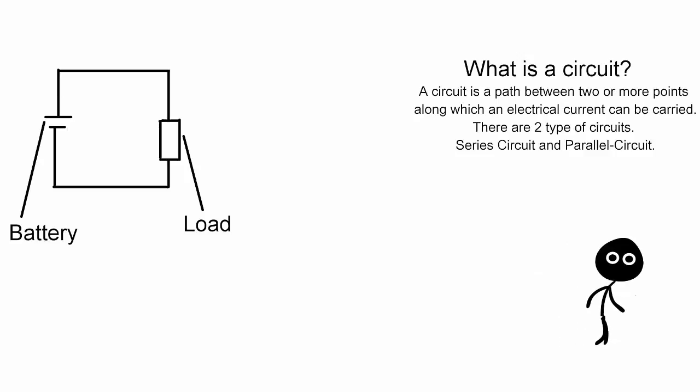So what is a circuit? A circuit is a path between two or more points along which an electrical current can be carried. There are two types of circuits.